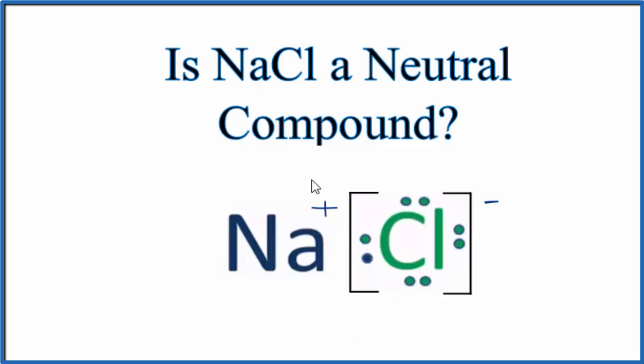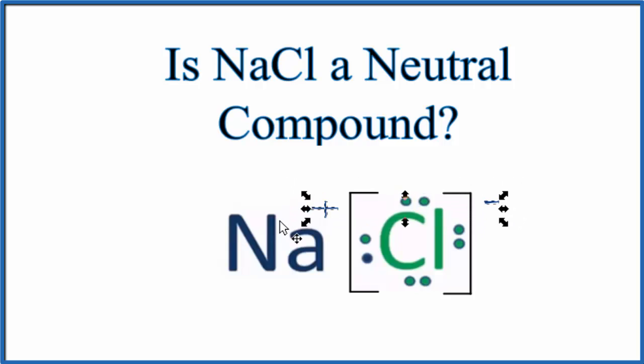So again, we have these ions that come together in an ionic bond. But the positive and negative add up to zero, giving us a net charge of zero. So sodium chloride is a neutral compound.